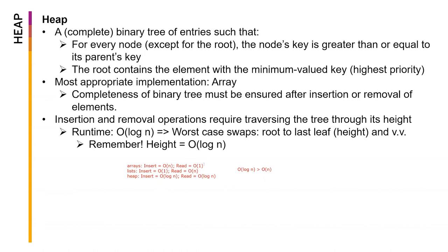We arrive at this comparison: arrays have O(N) insert and O(1) read; lists have O(1) insert and O(N) read; heap has O(log N) for both insert and read. It's a much more balanced data structure compared to arrays and lists — it's in between the two. That's why this runtime property is very important.